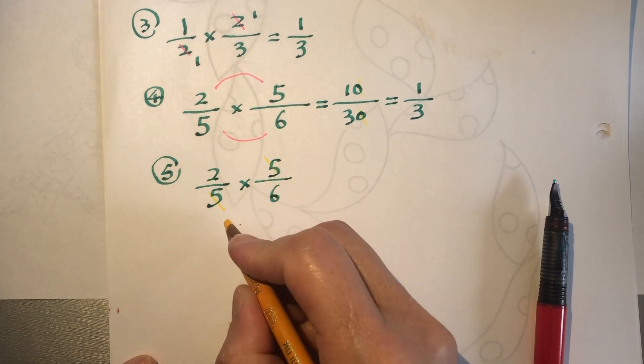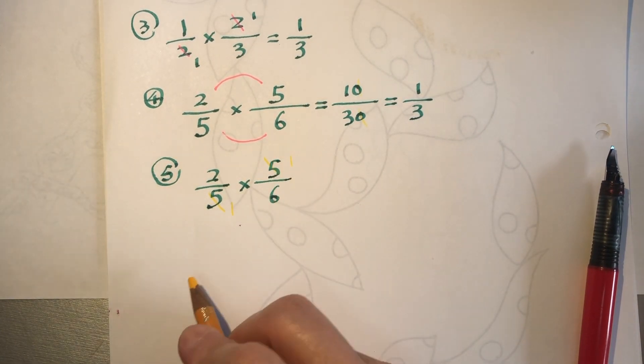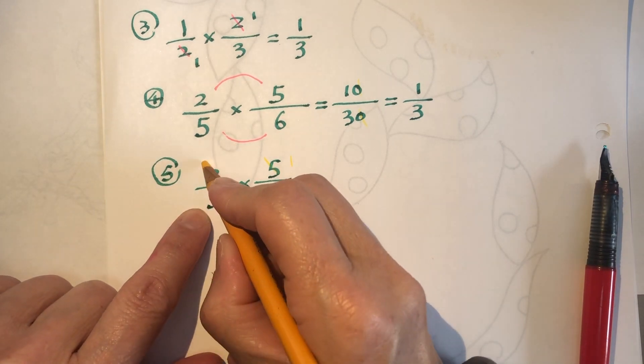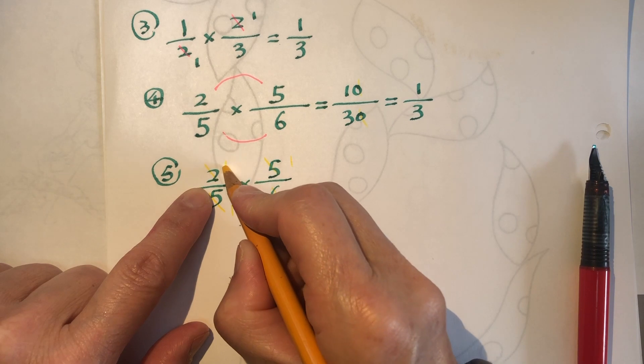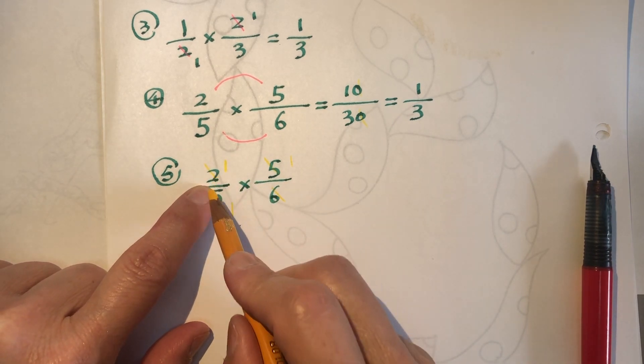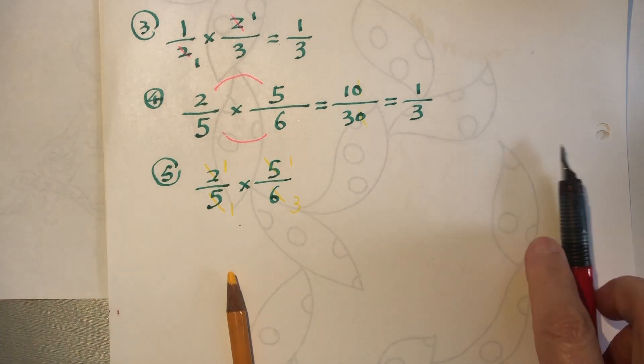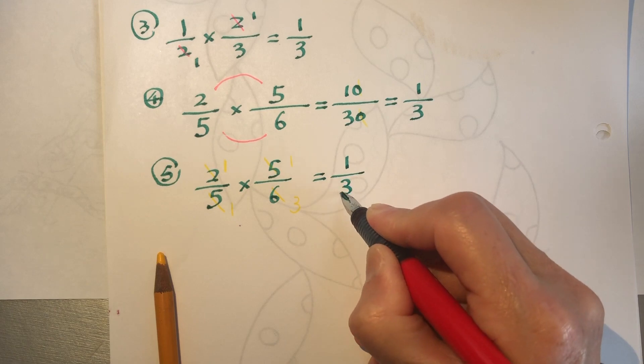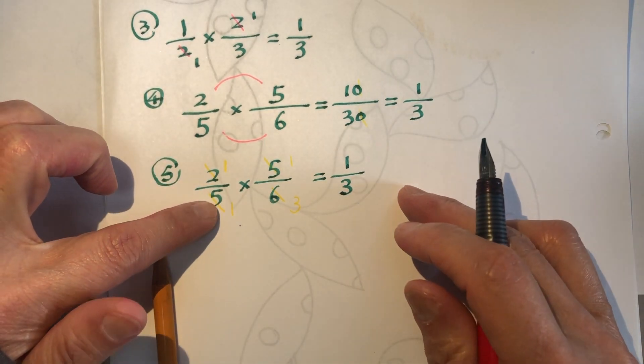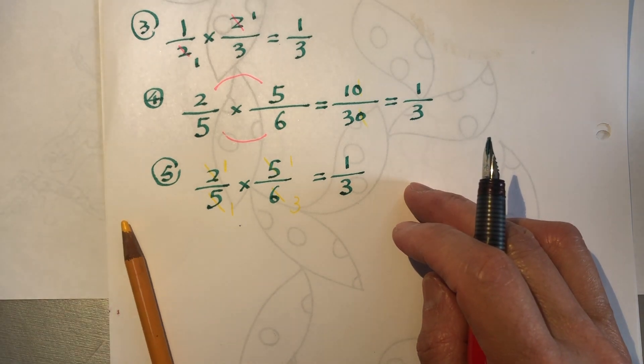5 and 5 can be both simplified, divided by 5. 2 and 6, we can... what can we do? Both divided by 2. So on top, 2 divided by 2 becomes 1, 6 divided by 2 becomes 3. So the result is 1 over 3. So we are getting the same result, it's just to go through different route.